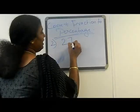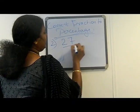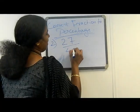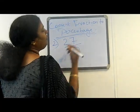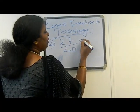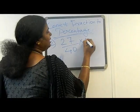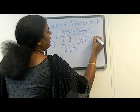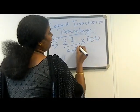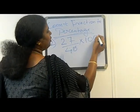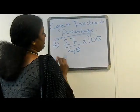The next example is 27 divided by 40. To convert to percentage, we multiply by 100.